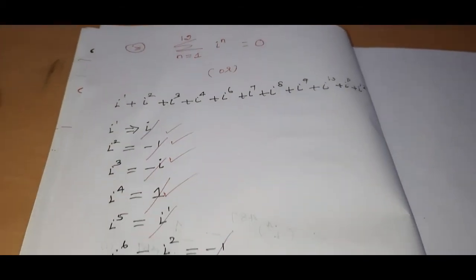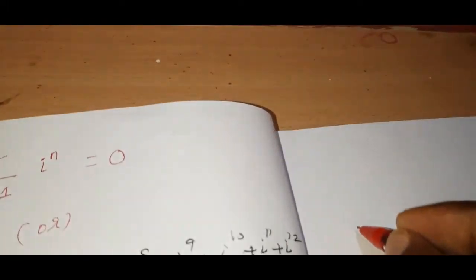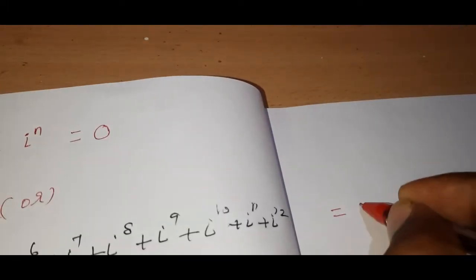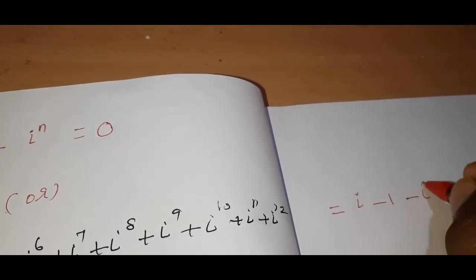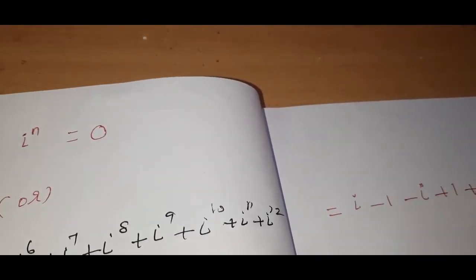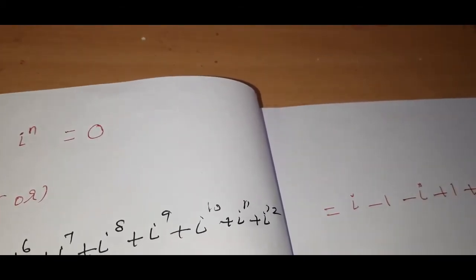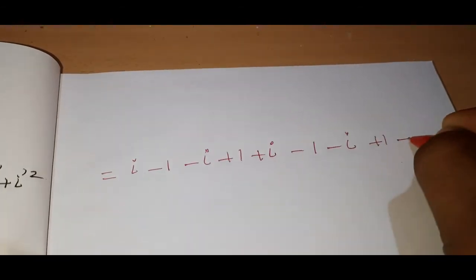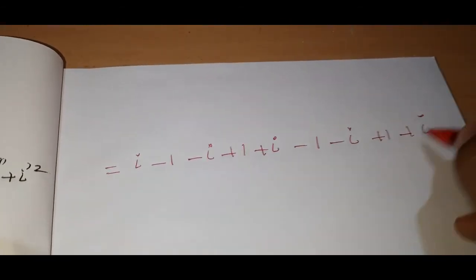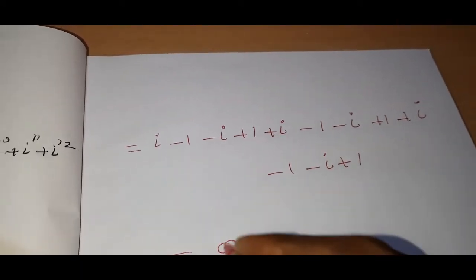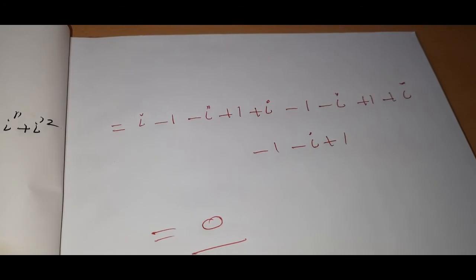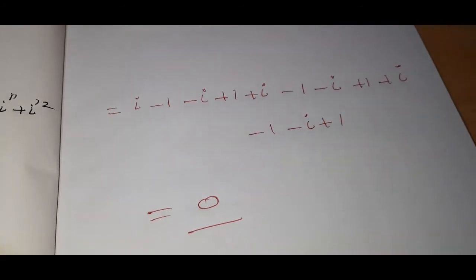Let's verify by writing out all the answers: i, minus 1, minus i, plus 1, plus i, minus 1, minus i, plus 1, plus i, minus 1, minus i, plus 1. Everything cancels and the sum is equal to 0. So the summation from n equals 1 to 12 of i power n equals 0.